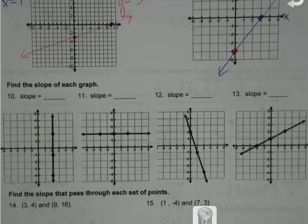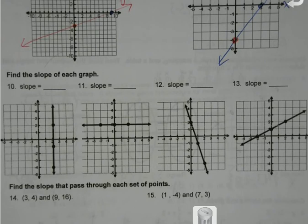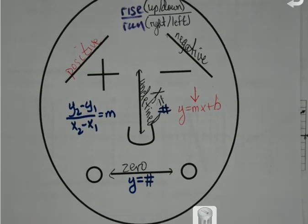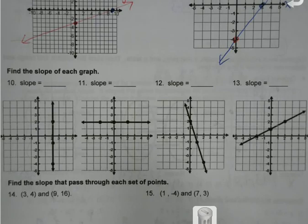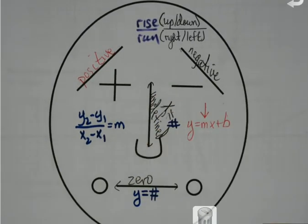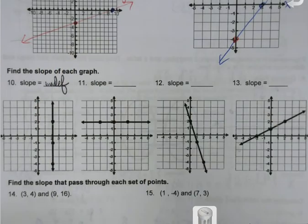Slopes. Find the slope of each graph. Numbers 10 and 11 have been our arch-nemesis — we can't always make up our minds about what slopes are on these. You know who we're going to call? Mr. Slope Guy. When it's going up and down, what's the slope? Undefined. I can just write 'undef.' And if it's just going side to side, the slope is zero. You can use Mr. Slope Guy on the test if you have him.